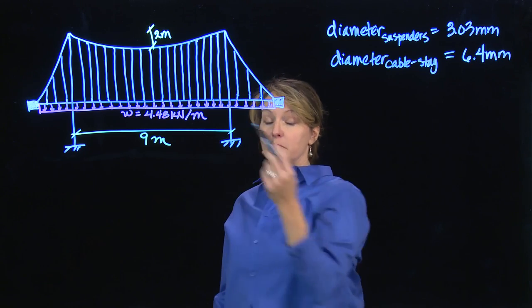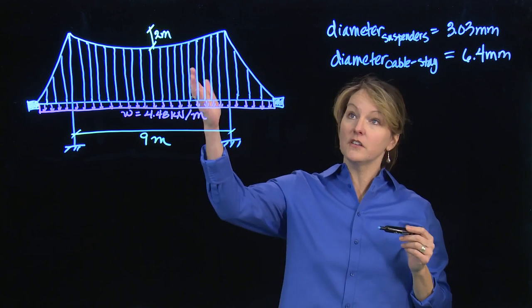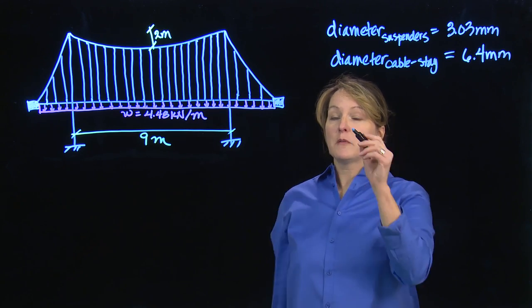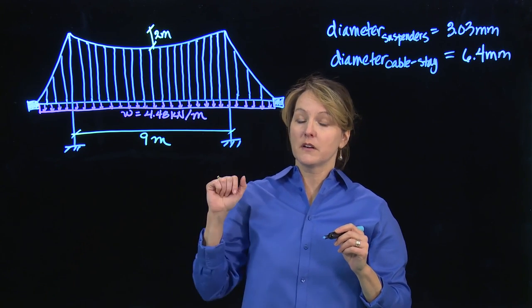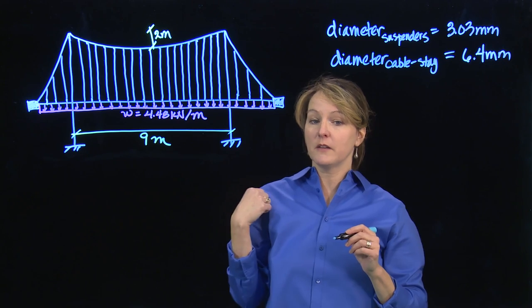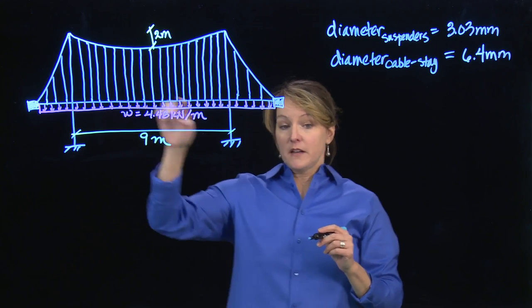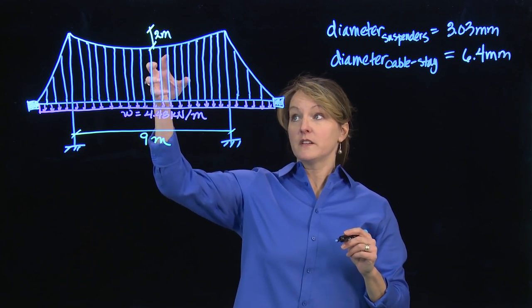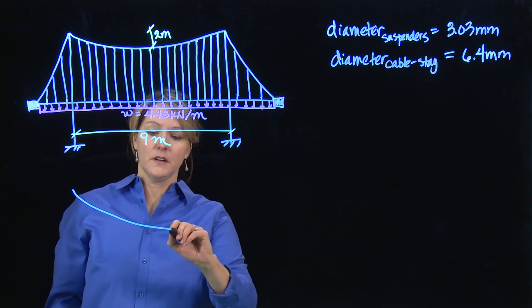But now the main thing I want to look at is this main cable. So I want to calculate, I need to calculate the tension force in the main cable. That will be my first goal. And then I also want to calculate the diameter of a steel cable that I would use for that main cable. So to do that, I'm going to look at a free body diagram focusing on that main cable. So I'll put that down here. Here's my main cable.